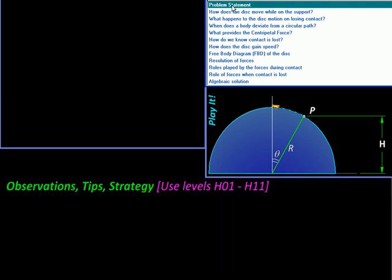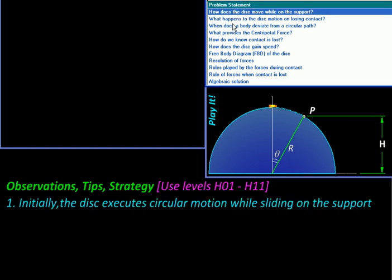Let us think this problem through. First, what will be the motion of this disk while it is on the hemisphere? See, it is moving along a hemispherical surface, so naturally its motion will be circular. Then what happens when it loses contact? Well, the moment it loses contact it is not moving along a circle anymore, so the circular motion will be violated.